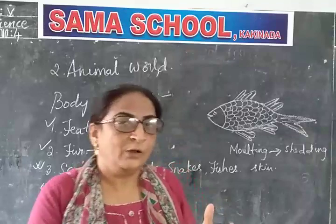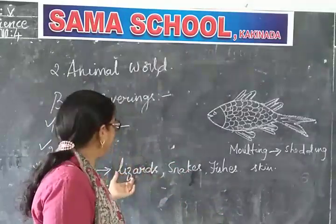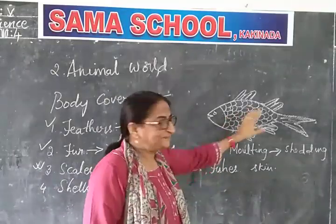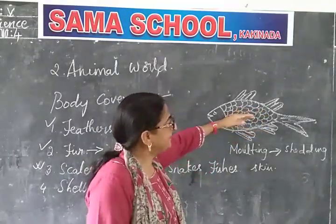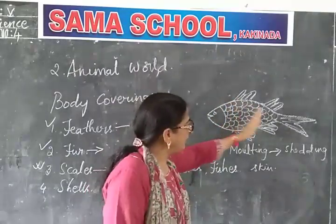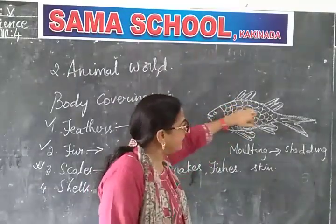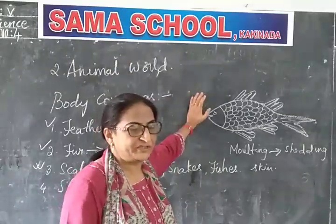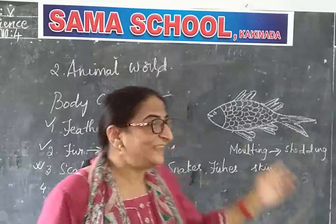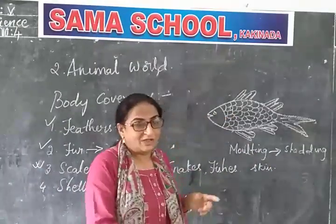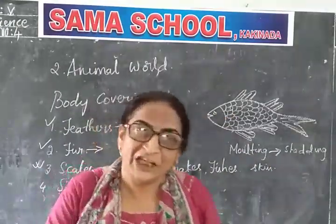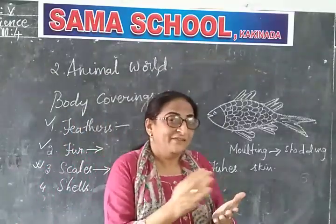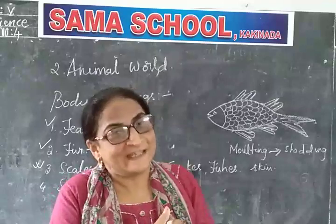So snakes have body coverings like scales, lizards have scales, and fishes have scales. These scales protect the skin underneath. When you remove the scales from a fish, you will find the skin underneath. For example, when your mother cleans fish, she will be removing the scales — and when they remove the scales, you will find the skin underneath.